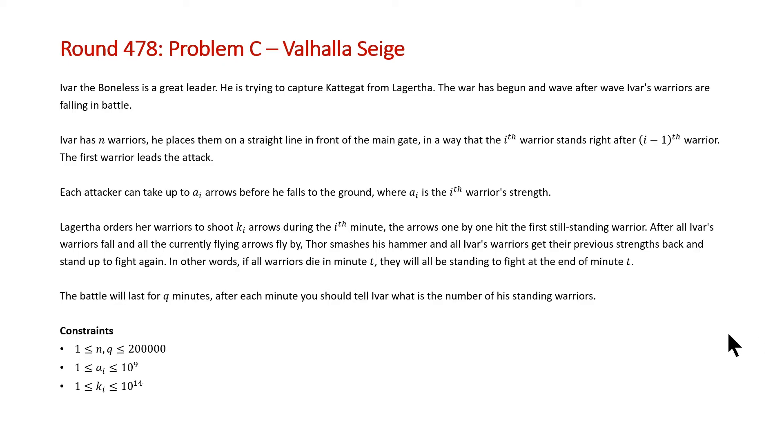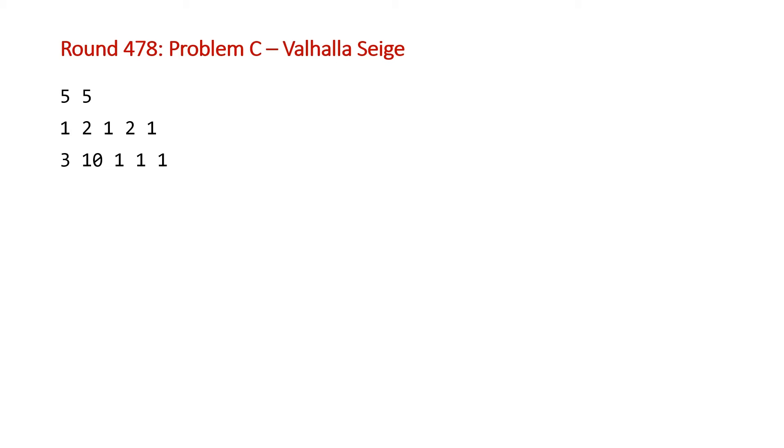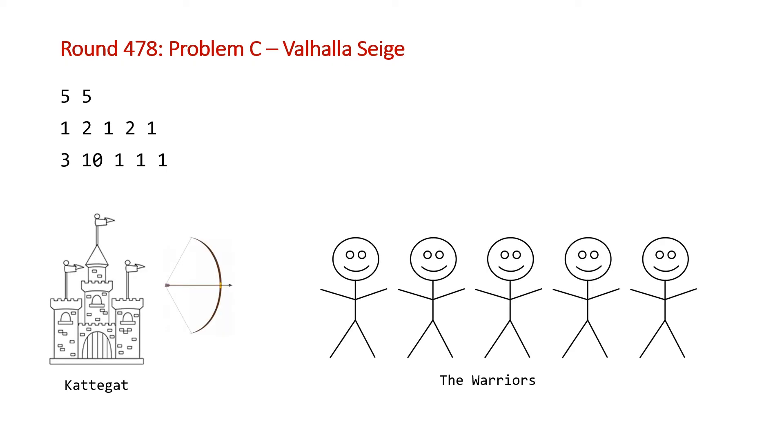So let's take a look at one of the examples that Code Forces has provided us with. In this example, we have the following input: five represents the number of warriors, the second five represents the number of turns, and for each turn we're given the number of arrows that are going to be unleashed. The visualization of this is the following. We've got our castle that Ivar the Boneless's warriors are trying to capture and they're taking arrows and dying each turn. Each of the warriors has the following strengths.